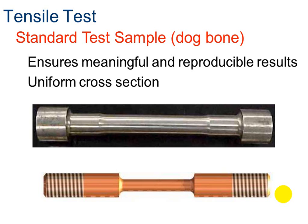When you do tensile testing, you need a test sample. We can't just take a full beam and build a machine big enough to fit it. So what we do is take a sample of the material the beam is made out of, which is much smaller — it's called a test sample or a dog bone, as PLTW likes to call it. This way we can have meaningful and reproducible results, so we know it's a true property of the material itself and not just of the sample.